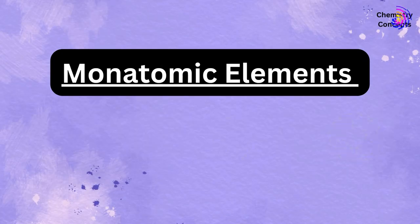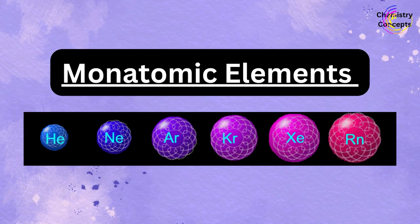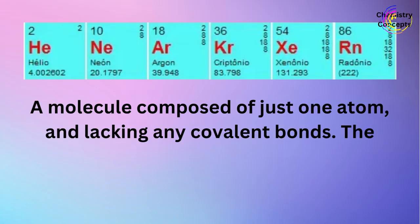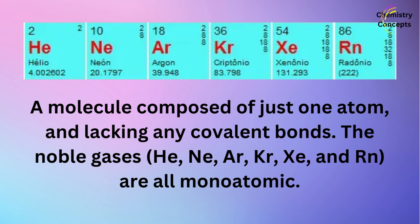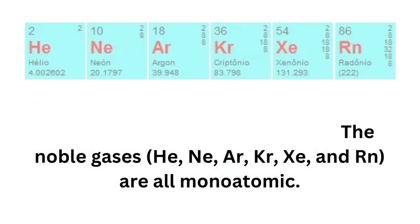Monatomic elements are molecules composed of just one atom and lacking any covalent bonds. The noble gases — helium (He), neon (Ne), argon (Ar), krypton (Kr), xenon (Xe), and radon (Rn) — are all monatomic.